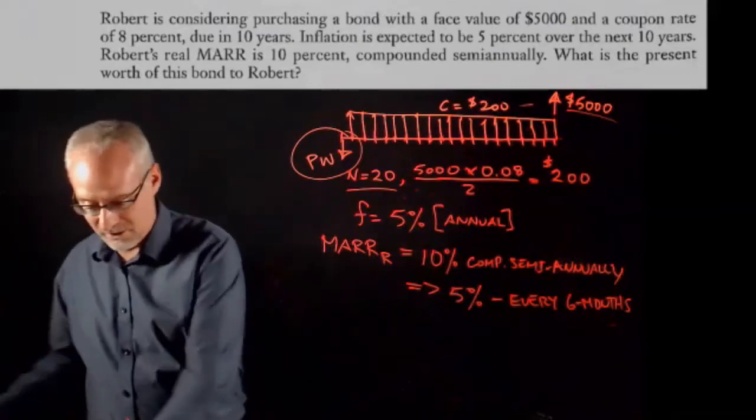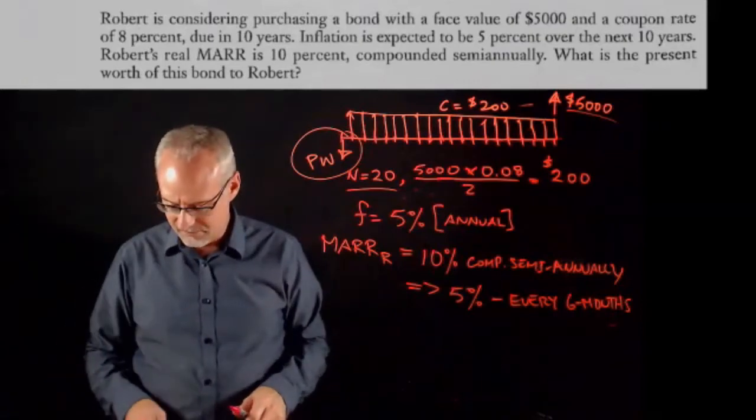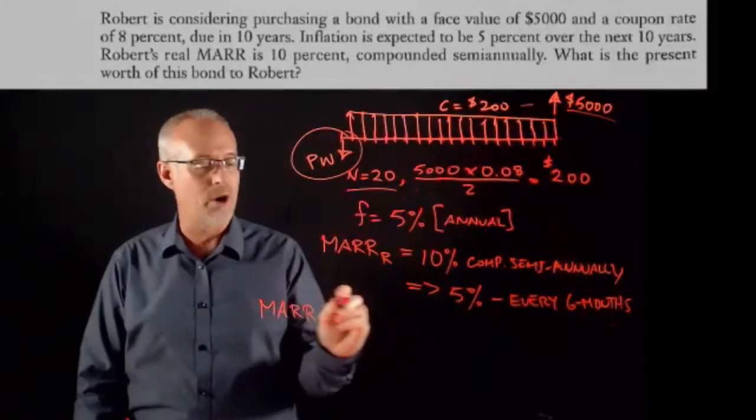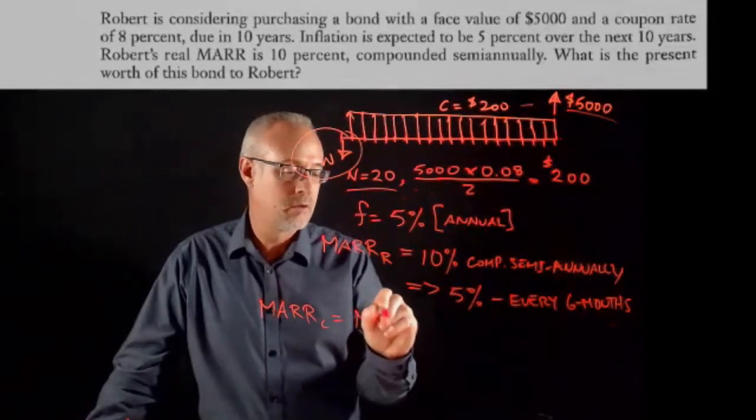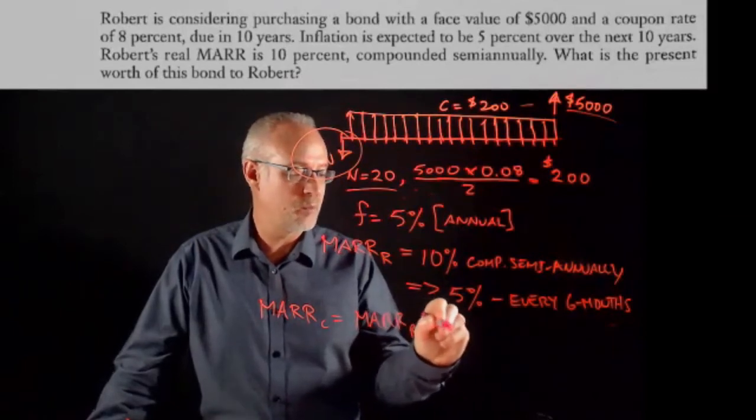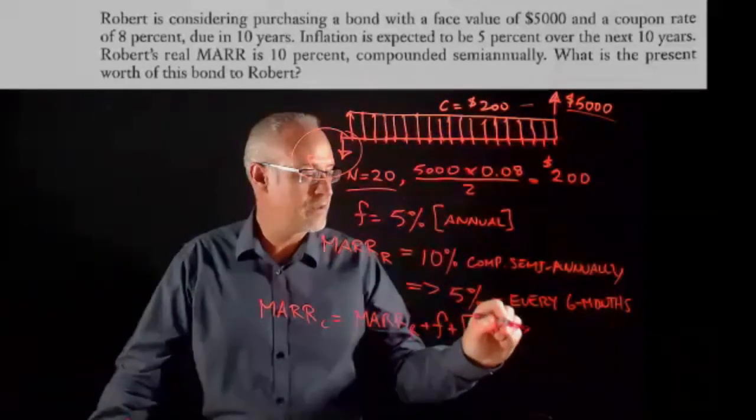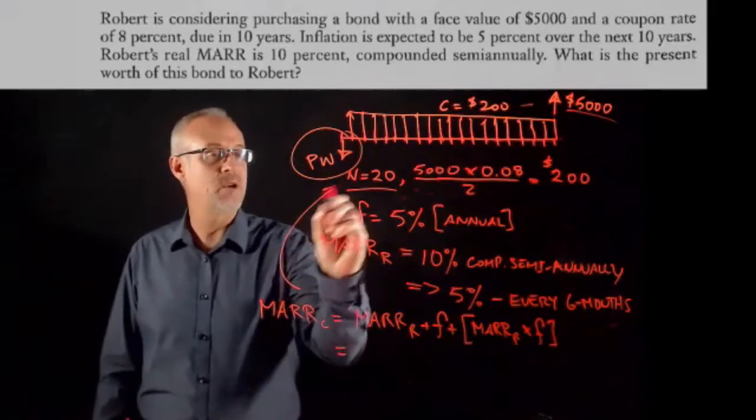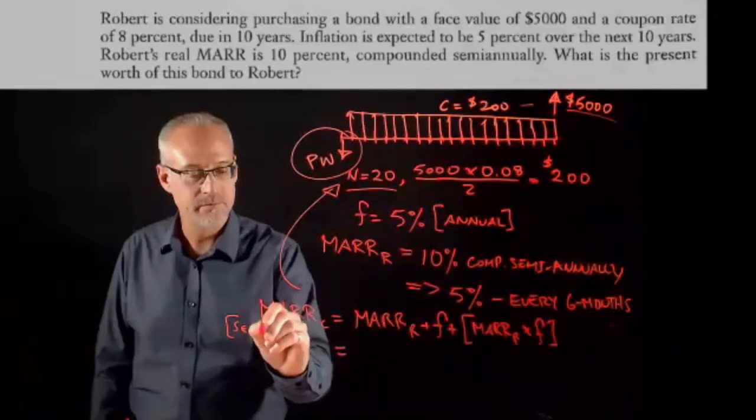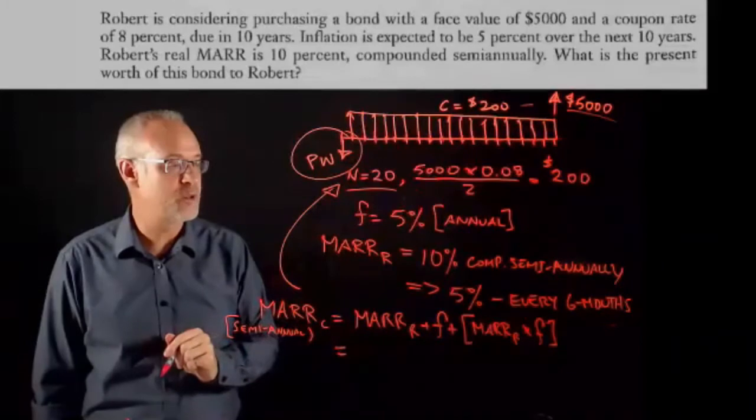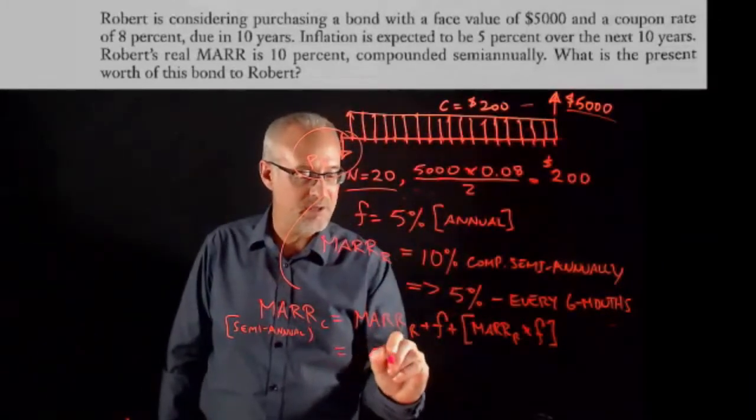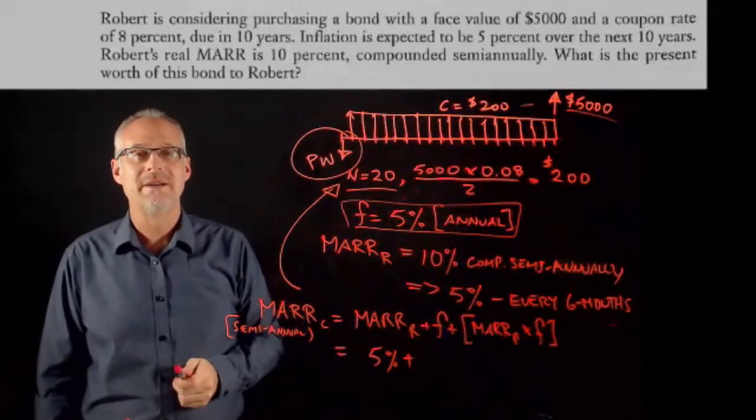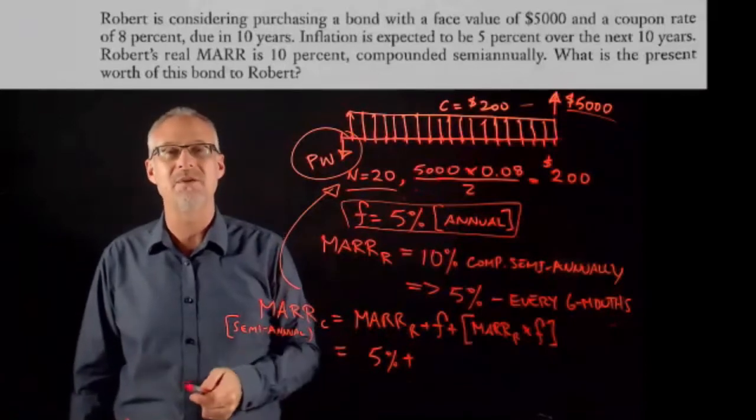The current MAR is going to be equal to the real MAR plus the inflation rate plus the extra small term of the real MAR times the inflation rate. We're going to do it for 20 periods, so we're going to have to make this a semi-annual rate. My MAR is 5%. What should I do for the inflation rate? The inflation rate of 5% is quoted as an annual rate, but I can't use an annual rate if I'm calculating a semi-annual rate here.